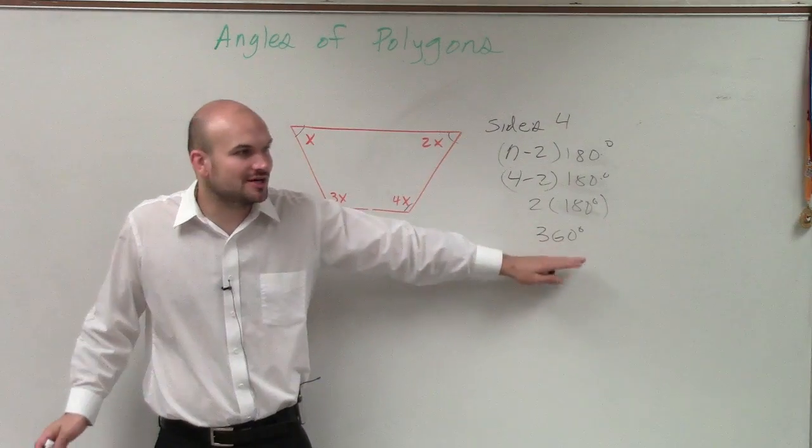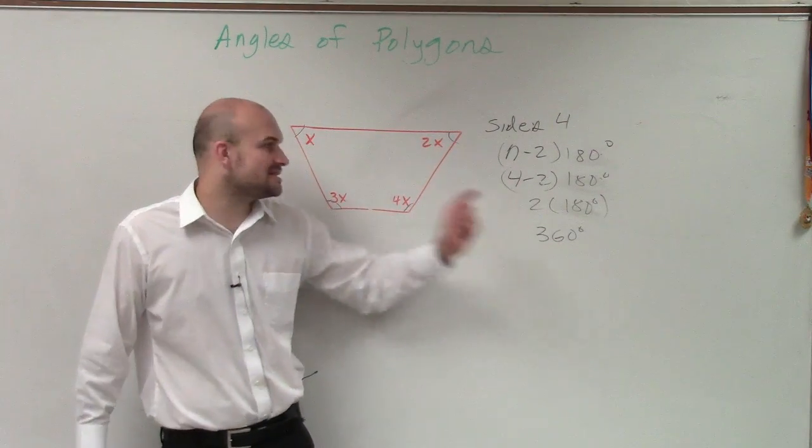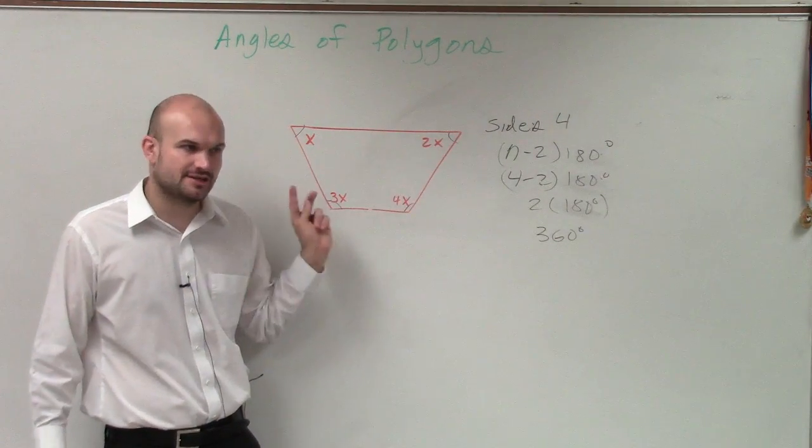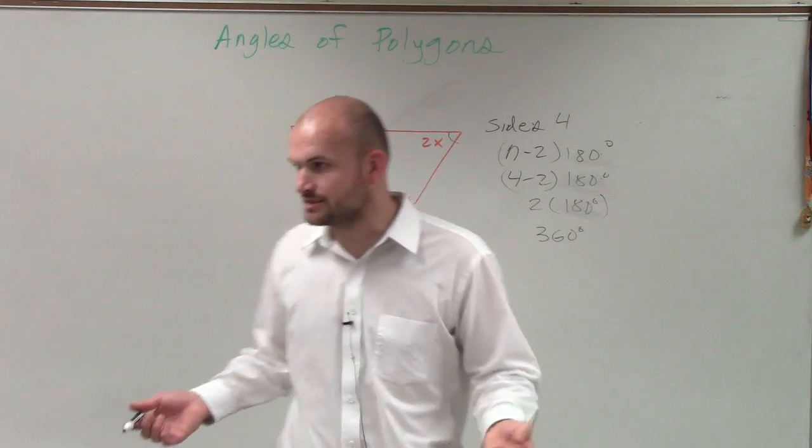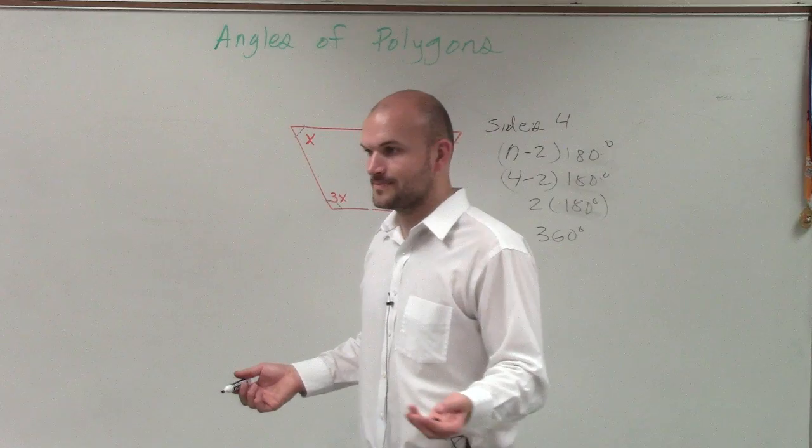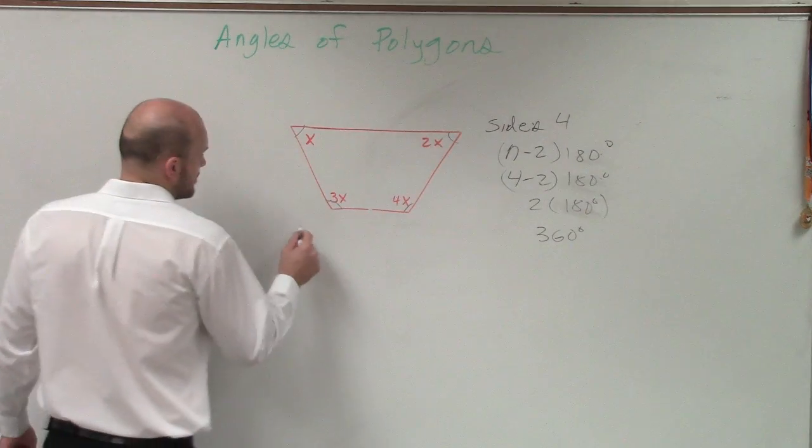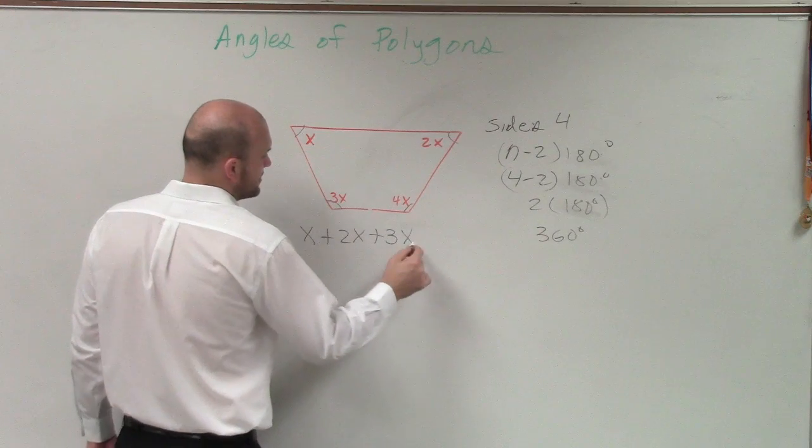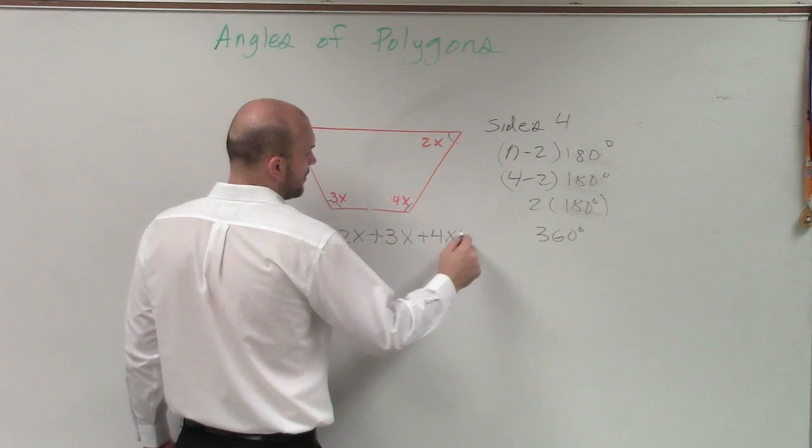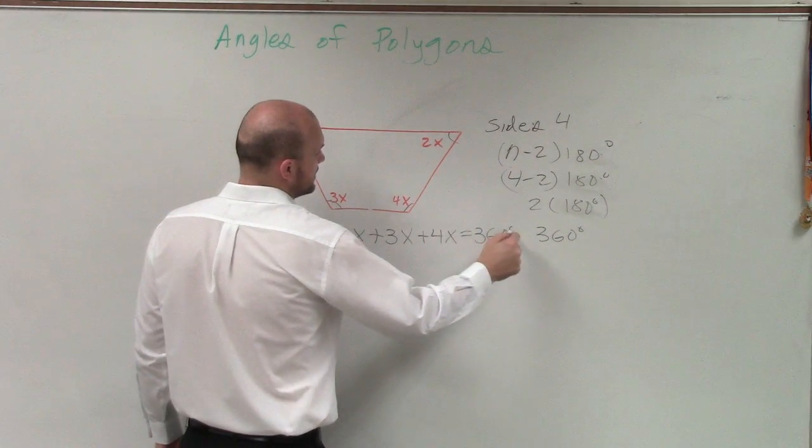Remember, this 360 degrees represents the sum of all of my interior angles. So sum represents what operation? Add, subtract, multiply, divide? Add. So x plus 2x plus 3x plus 4x equals 360 degrees.